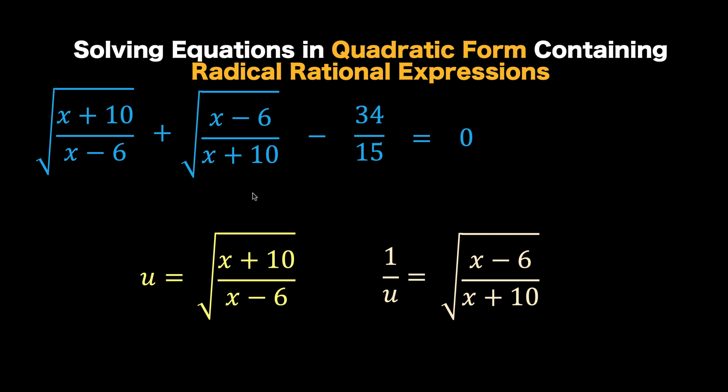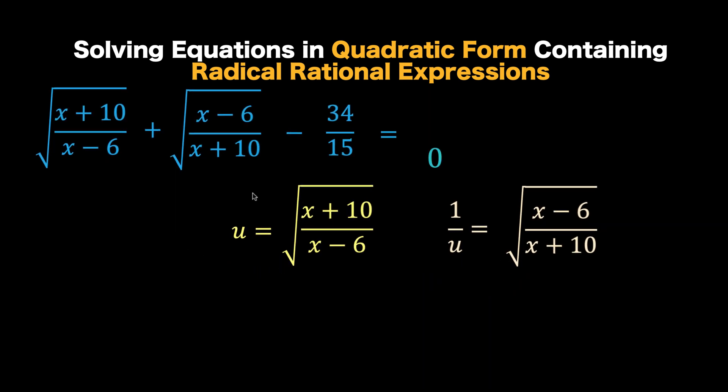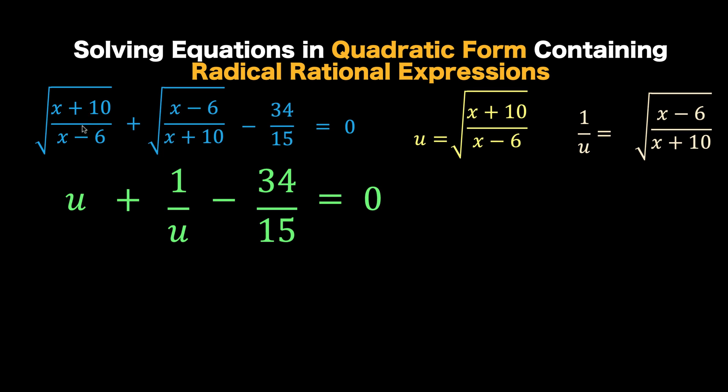we can now rewrite the original equation this way. This first term is our u. The second term is 1 over u. And we copy all the rest. In order to simplify this rational equation, we can multiply each of the terms of this equation by the LCD of u and 15, which is 15u. Let's do that.